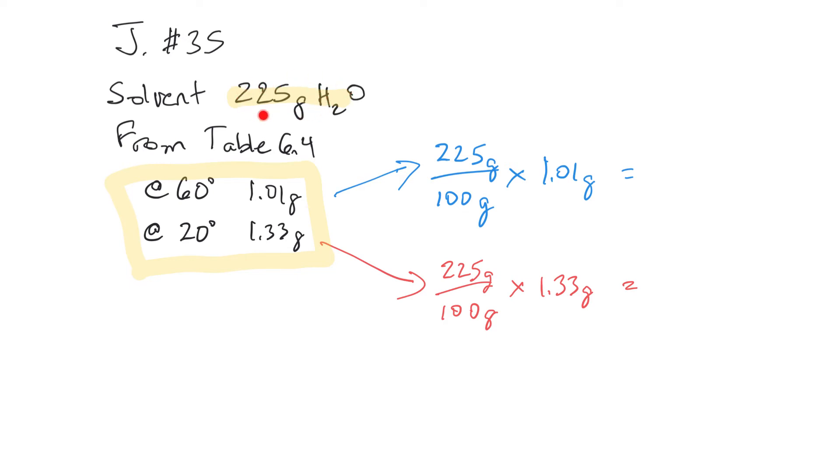We're putting that right here and dividing by 100 grams because that's how the table is set up. In other words, if we had 200 grams, you would expect that we would have double the 1.01. If we had 300 grams, we would have three times as much.